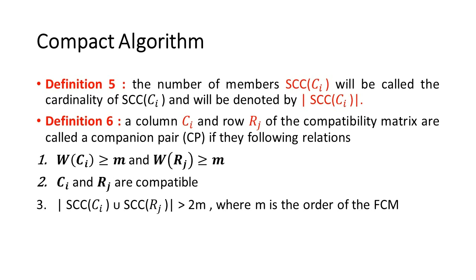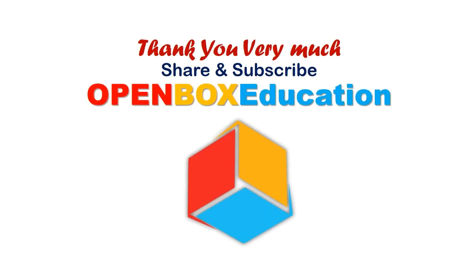W(C_i) ≥ m and W(R_j) ≥ m; C_i and R_j are compatible; |SCC(C_i) ∪ SCC(R_j)| > 2m, where m is the order of the FCM.